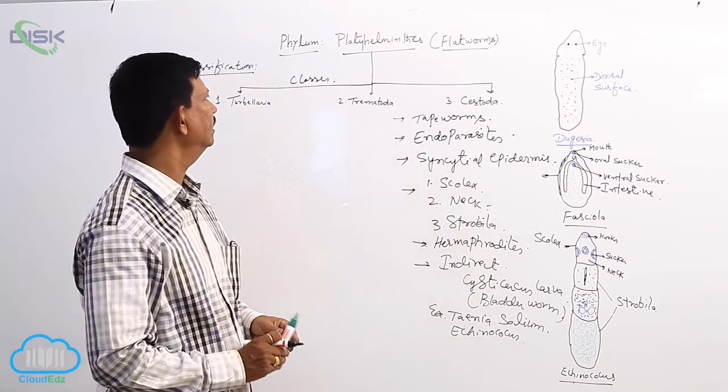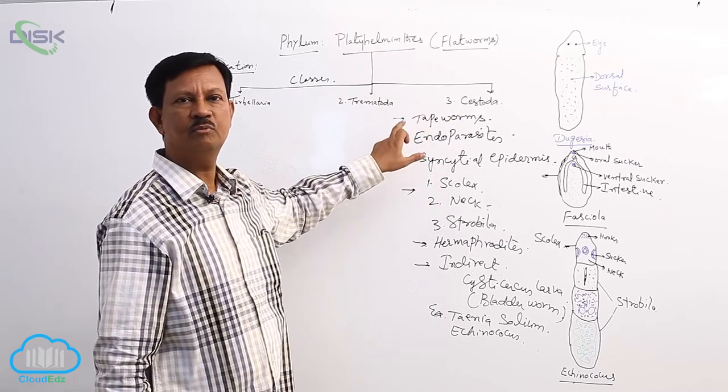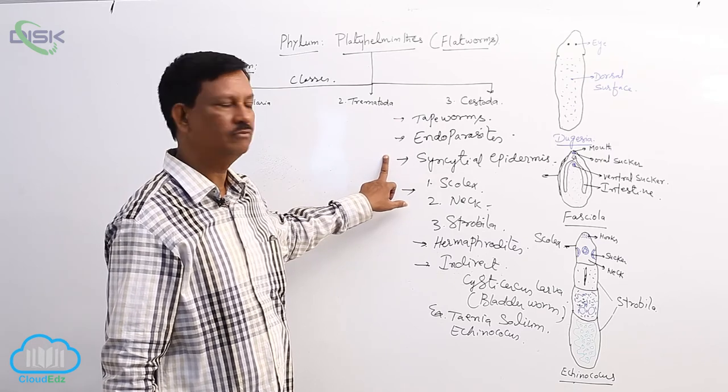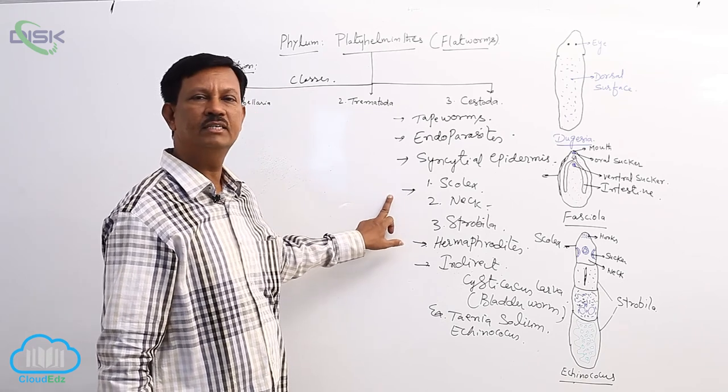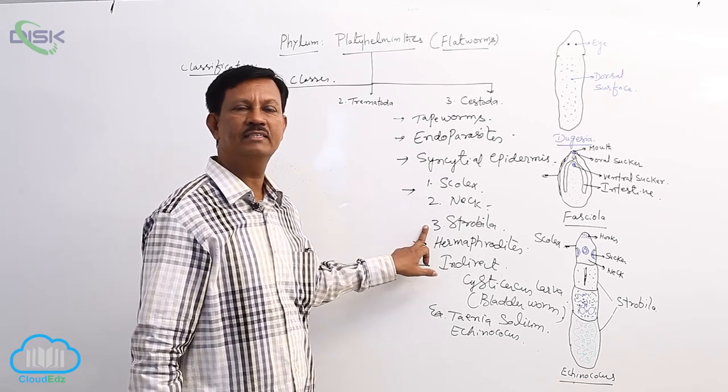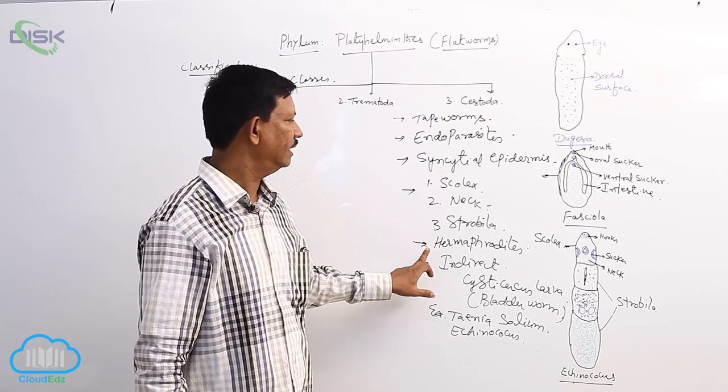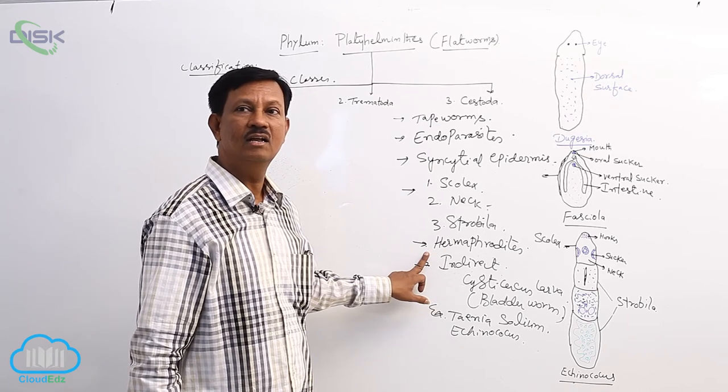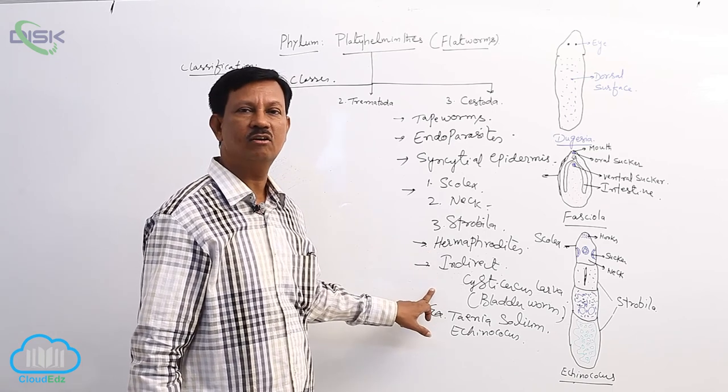These are the main characters of class Cestoda. They are commonly known as tapeworms, are endoparasites mostly found in the intestine of the host, have syncytial epidermis, and the body is divided into scolex, neck, and strobila with different segments showing pseudometamerism. They are hermaphroditic animals with highly complicated reproductive organs.